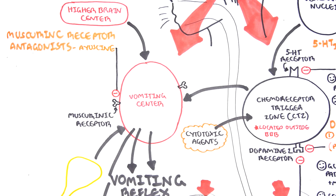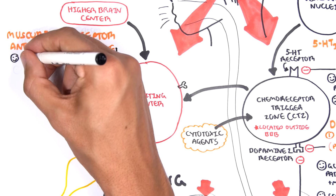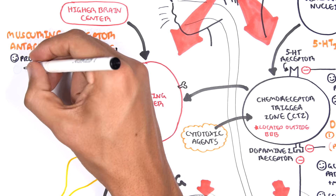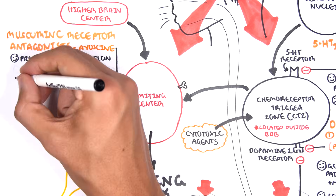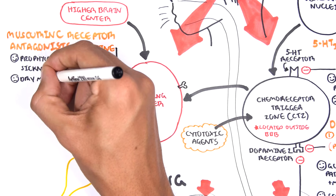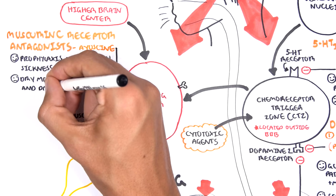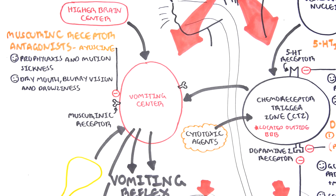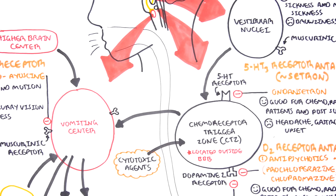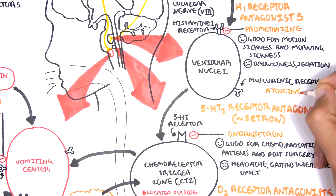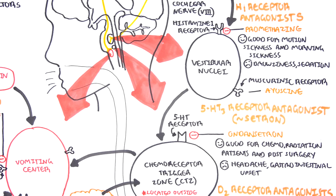Finally, the muscarinic receptor antagonists, or anticholinergics, such as hyoscine, are good as prophylaxis for certain conditions and for motion sickness. Side effects include dry mouth, blurry vision, and drowsiness — easy to remember as anticholinergic side effects, using the mnemonic of Alice in Wonderland for anticholinergic syndrome. These drugs are particularly effective for motion sickness because they work at the vestibular nuclei, where the motion sickness pathway originates.